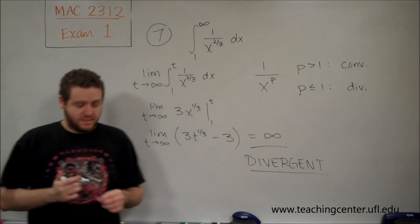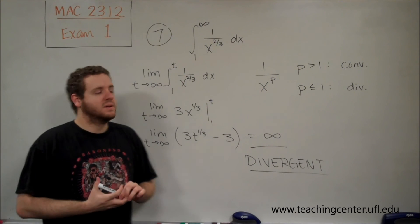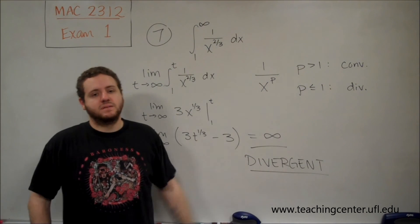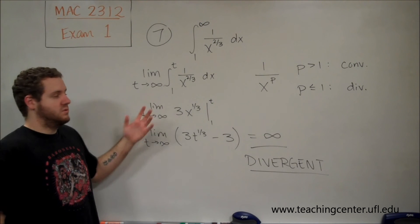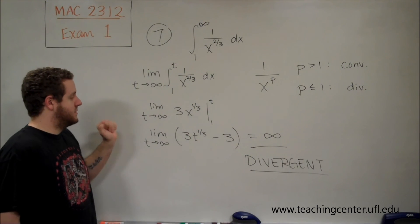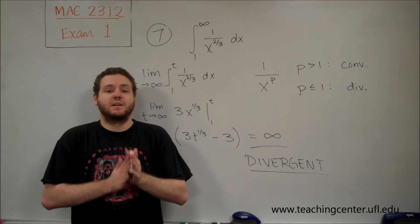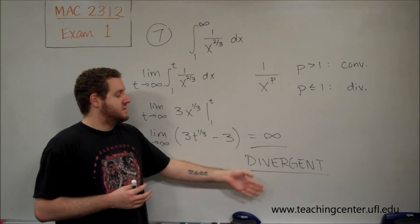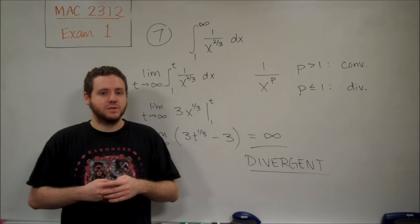But oftentimes you're going to be asked to do improper integrals that are not of your basic p-series. In that case, you need to do the method here. Do the antiderivative like normal, take the limit as whatever bound goes to infinity, and just see that if you get an infinite answer, it's divergent. If you got a finite answer, you'd have convergent.